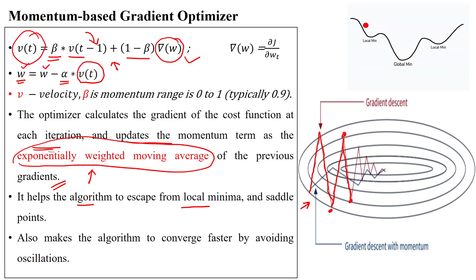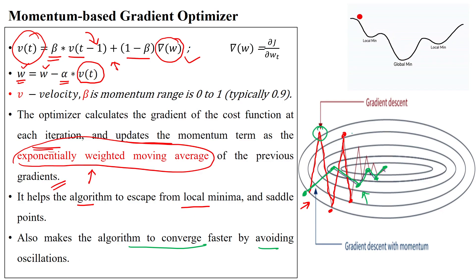When using momentum-based optimization with the momentum factor, starting from the same point, it takes less magnitude than normal batch gradient descent and reaches the minimum error — the global minimum — in less time. It gives better performance by converging faster and avoiding oscillations. Batch gradient descent has more oscillations, while momentum-based gradient optimization has fewer oscillations.